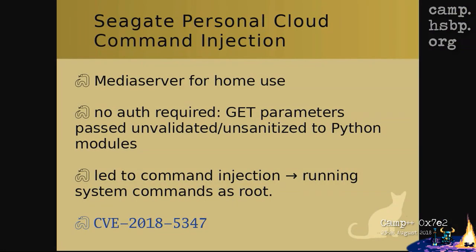There was also a Seagate Personal Cloud command injection. The Seagate Personal Cloud is a home media server with hard disks — many people use it for movies, backups, etc. It runs a Django/Python application. The exploit required no authentication — you just needed to be in the network or have remote access. GET parameters were passed unsanitized to pipe modules, leading to command injection. Worse, it was running as root, so you could execute system commands as root on the device.